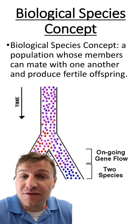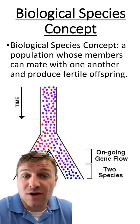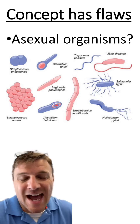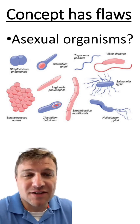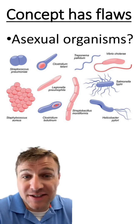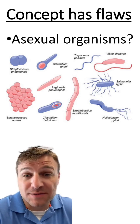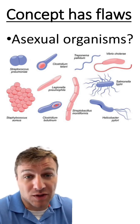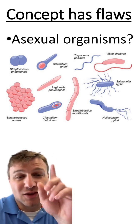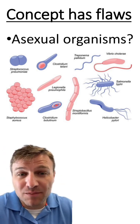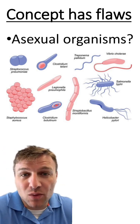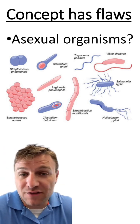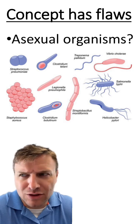There are other flaws with this concept. How do we classify different species like bacteria or organisms that go through asexual reproduction? It looks easy here, but how do we know when a species of bacteria is a new species?